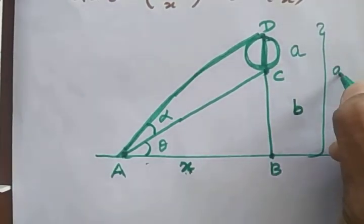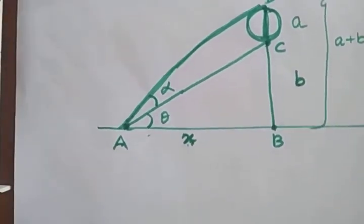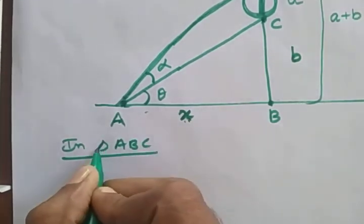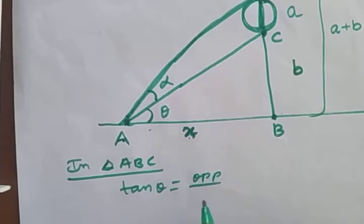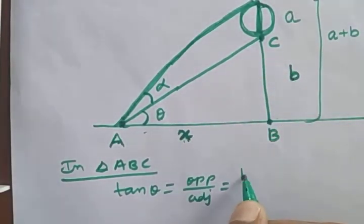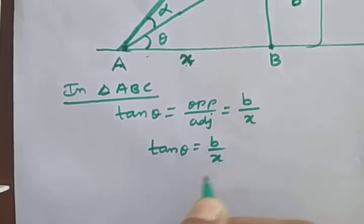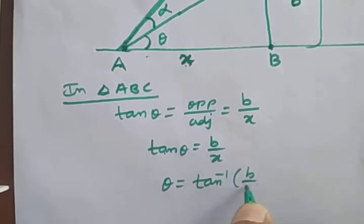For the small triangle at the bottom, the opposite side is b and the adjacent side is x. So tan θ = b/x, which gives θ = tan⁻¹(b/x). This is the first result.